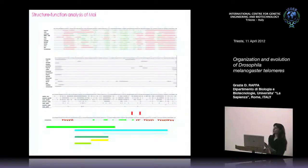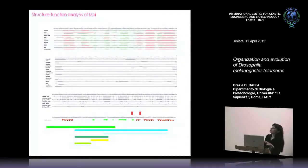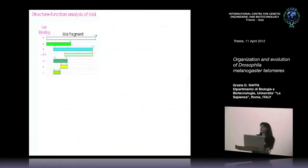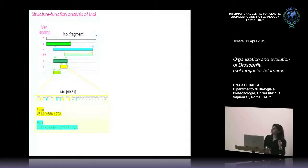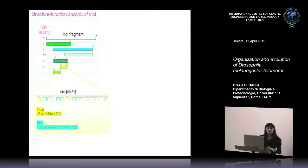We were then interested in understanding more about MOI function, but it has been difficult because this protein has no structural motif that might give us a hint of its function. We analyzed elements of secondary structure and exposure of residues, and built some deletions to map the domain responsible for interaction with VER, with HipHop, and for binding DNA. There is a small region of 22 amino acids sufficient for binding to the VER protein. Within this region, there are three amino acids nicely exposed on the surface that are invariably conserved across all Drosophila species, and six other residues exposed on the surface.